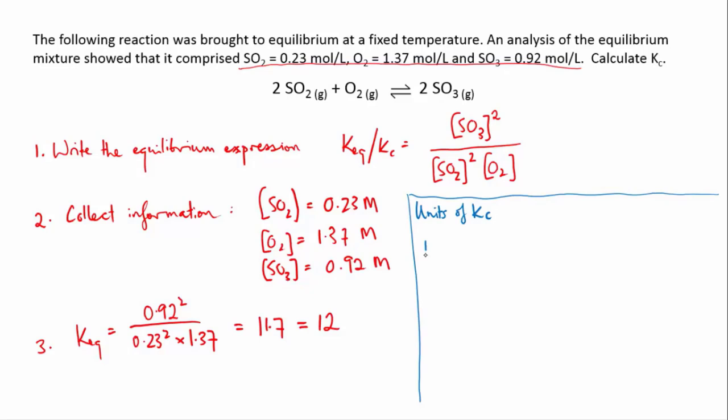If we look at this particular one, our Keq has the concentration of sulfur trioxide squared on the top, so each of those concentrations has units of moles per liter. Because it's squared, our units on the top are going to be moles per liter times moles per liter.